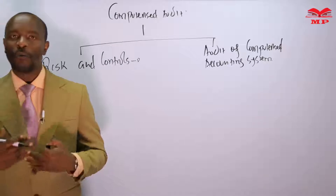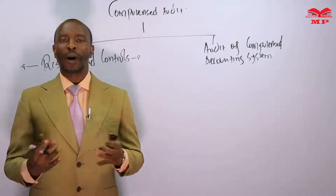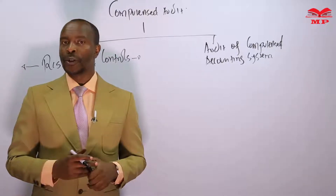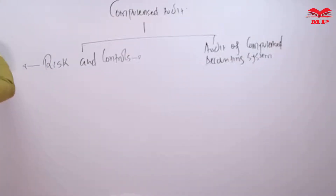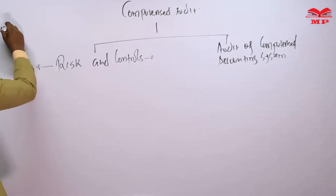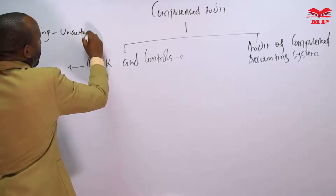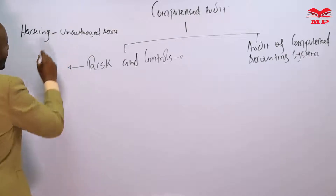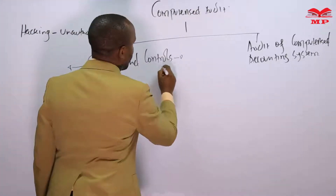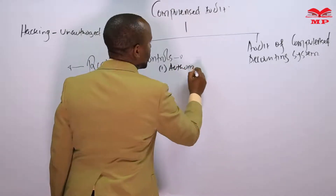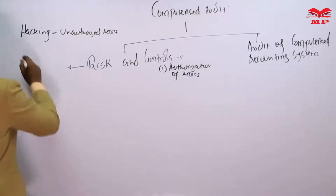When you have a computer system — forget about auditing for a moment — assume you have a computer being used for accounting or operations in your company. There are a number of problems you may encounter. One of the biggest is what we call hacking, or if you prefer the formal term, unauthorized access. If there is unauthorized access, someone is accessing your system without proper authority. The control for this is authorization of access.